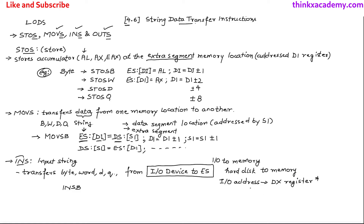For INSB, the extra segment referenced by DI is assigned the value from DX. So DX holds the I/O device address, and the data from that device is transferred to ES:[DI]. That's what INS essentially does — it transfers I/O device data stored at the DX register to the extra segment.